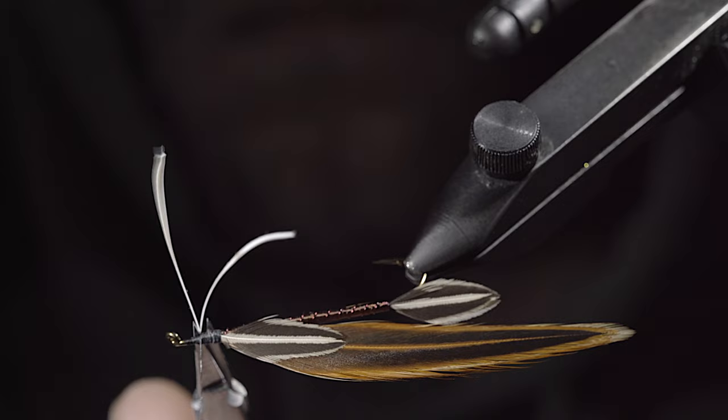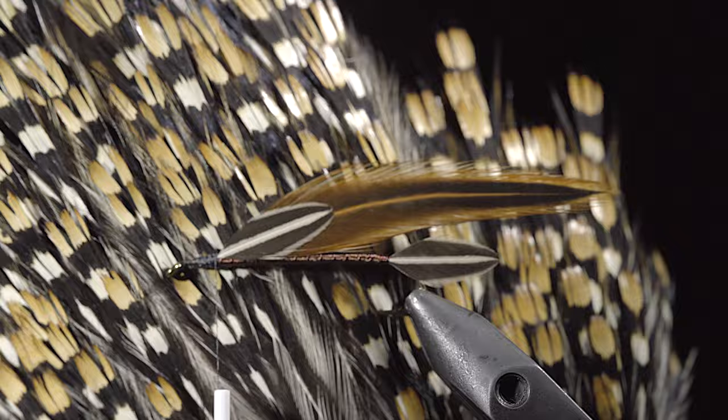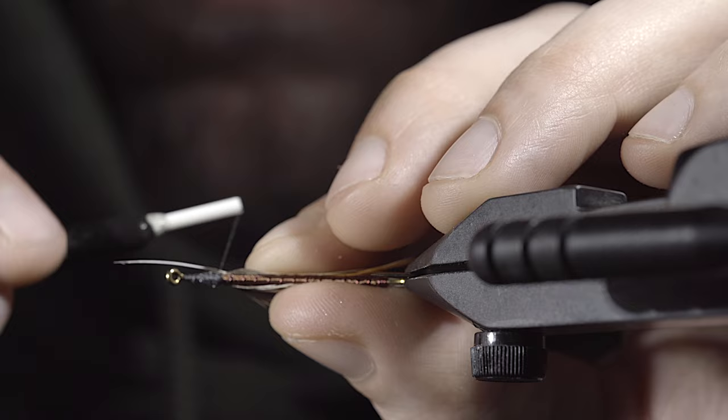Grab some jungle cock eyes. We'll select two eyes and secure them to the side of our fly, trying to stay in line with the barring of our previous feather. Once happy, secure it tightly and repeat the process to the other side.